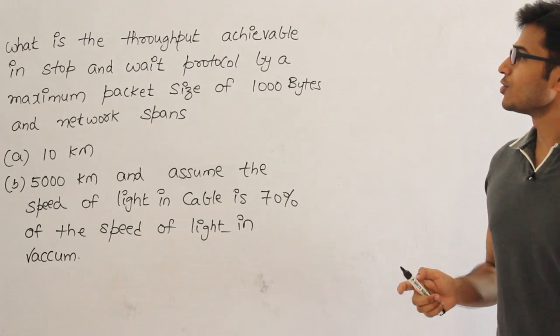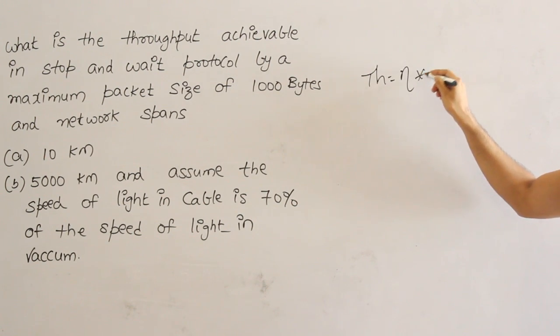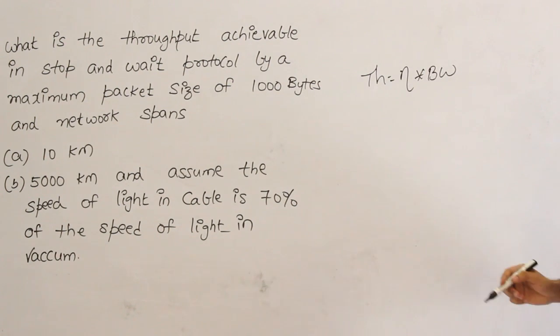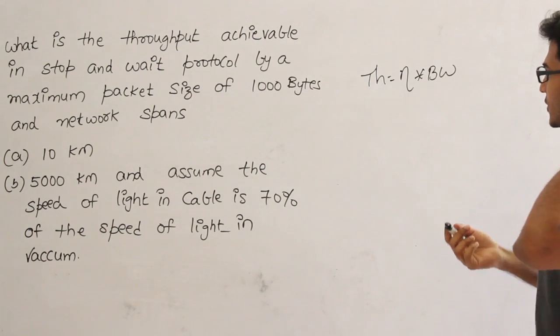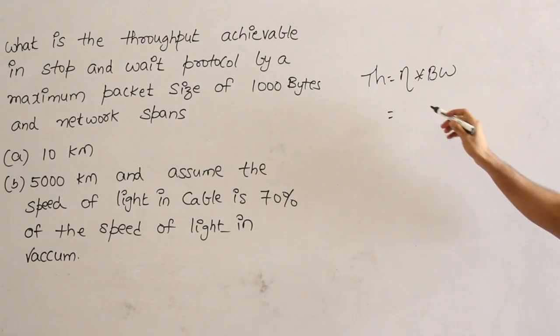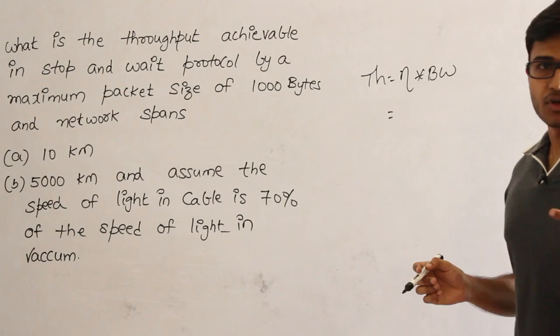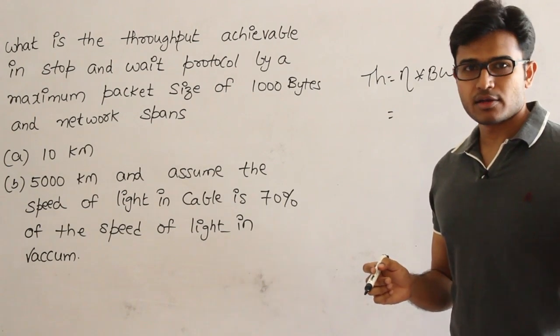First thing is what is the throughput? We know that throughput equals efficiency into bandwidth. Throughput is always efficiency into bandwidth. Then what is efficiency here? Efficiency in throughput is 1 by 1 plus 2a. That is what we generally use. How did I derive it?